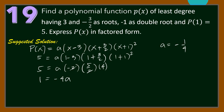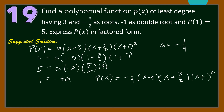Then in factored form, substituting a = −1/4, we have P(x) = −(1/4)(x − 3)(x + 3/2)(x + 1)².